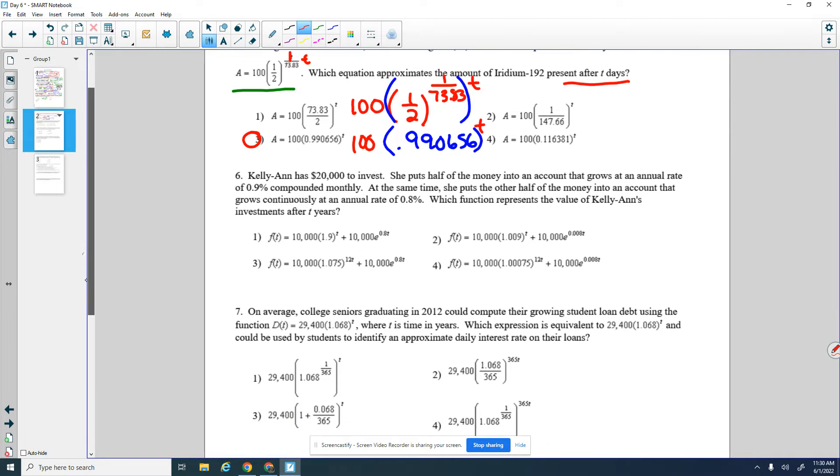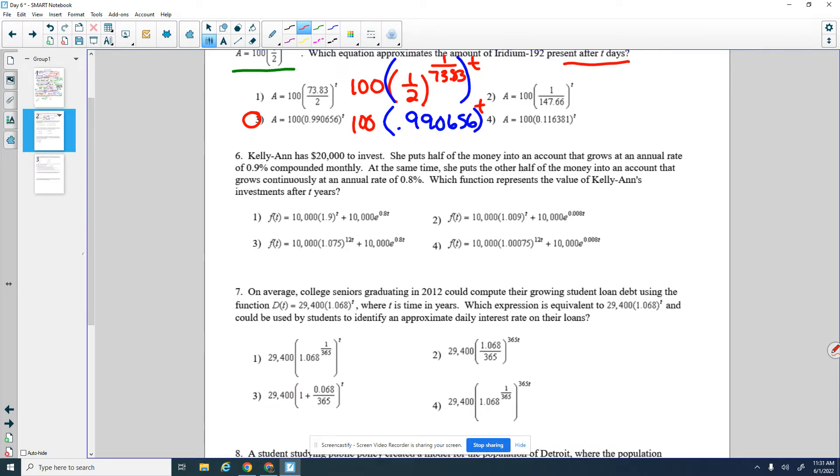The next one says, Kellyanne has $20,000 to invest. She puts half of the money into an account that grows at an annual rate of 0.9% compounded monthly. At the same time, she puts the other half of the money into an account that grows continuously at an annual rate of 0.8%. Which function represents the value of Kellyanne's investment after T years? So I actually think it's easier to start with the second part. This is growing continuously.